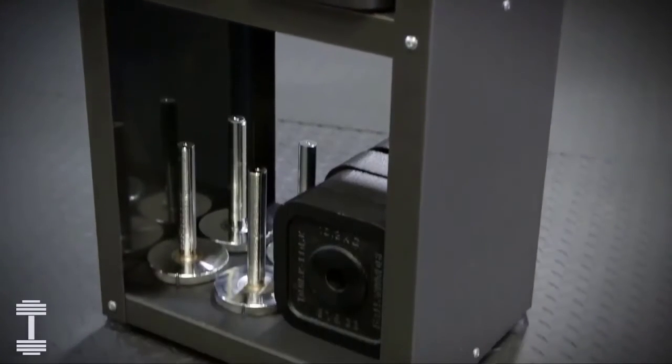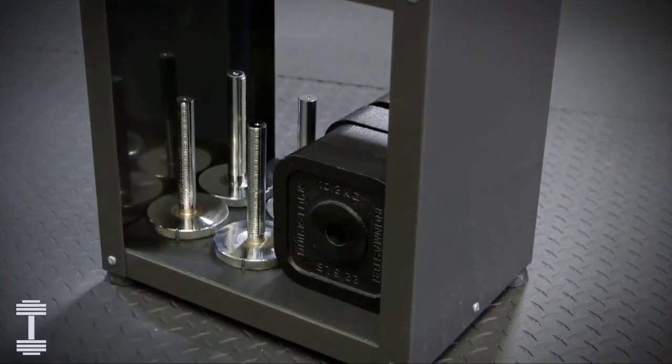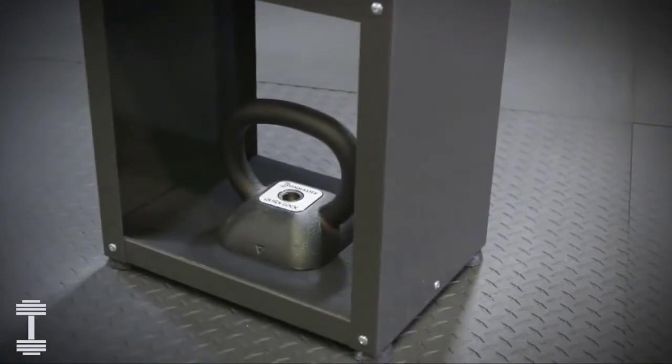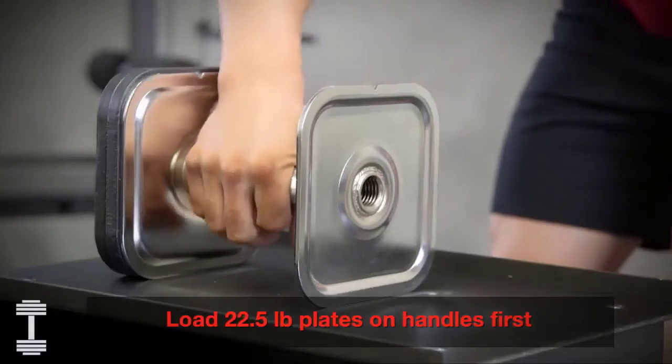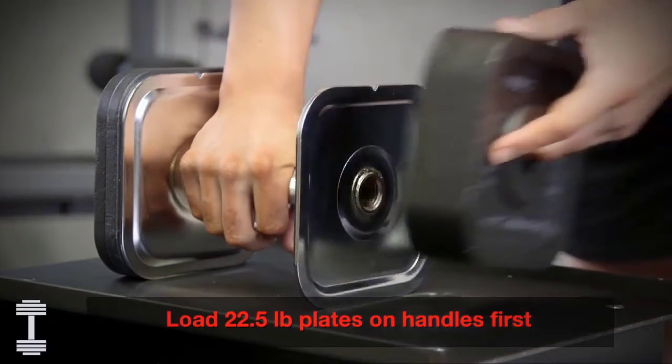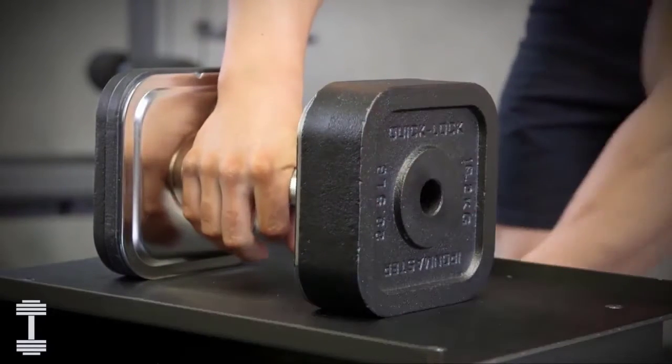The add-on kit for the dumbbells is normally stored on the bottom shelf of the stand, or you can store a kettlebell handle there. The best way to use the add-on kit is to load the large plates onto the handles first, then add the smaller plates.